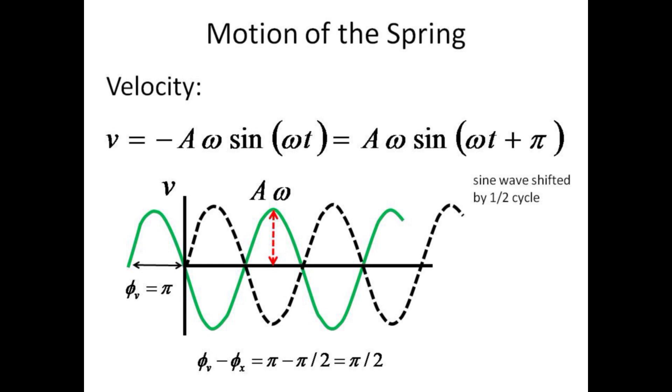The inverted sine function for velocity is equivalent to introducing a phase advancement of a half cycle, or pi radians. Thus, the velocity amplitude will be the position amplitude multiplied by omega, and the velocity phase,